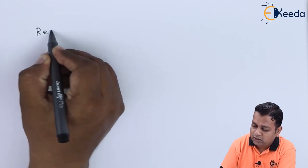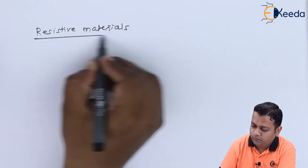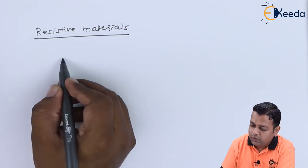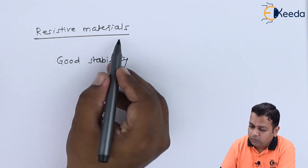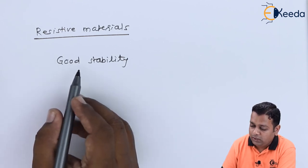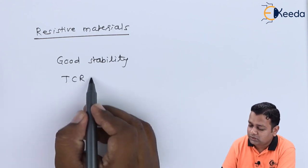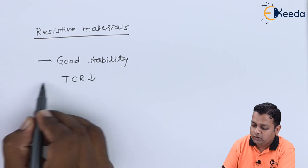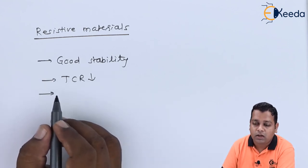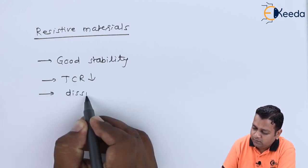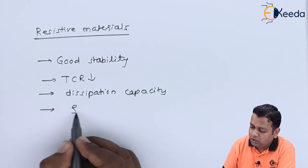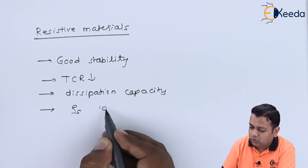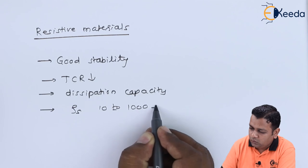The fourth type of materials are the resistive materials. For resistive materials, there should be good stability, a low temperature coefficient of resistance (TCR), and adequate dissipation capacity. The sheet resistivity, denoted by rho-s, should be in the range of 10 to 1000 ohms per square.